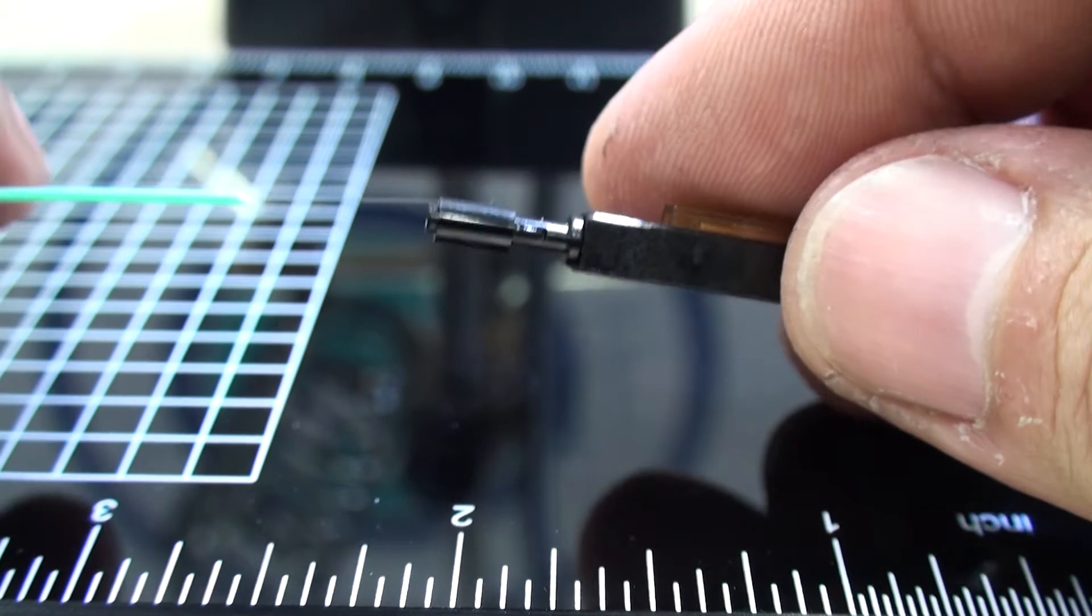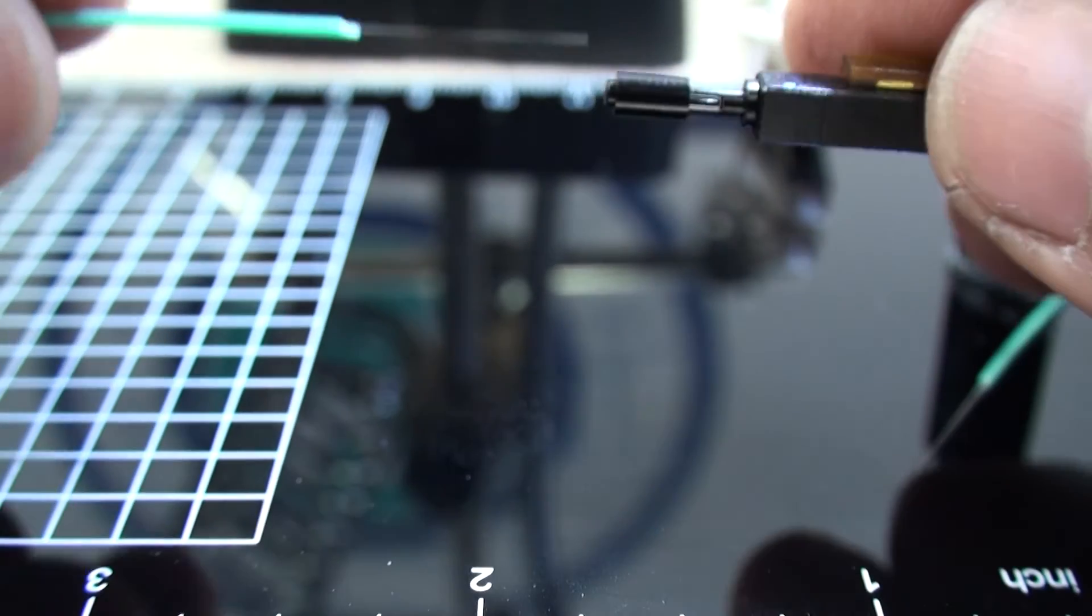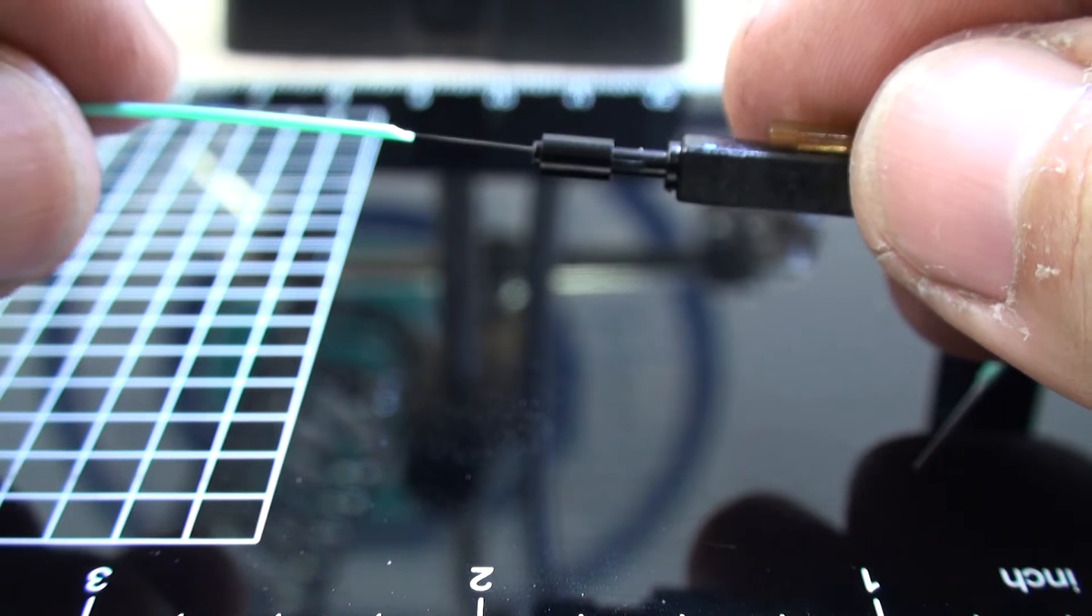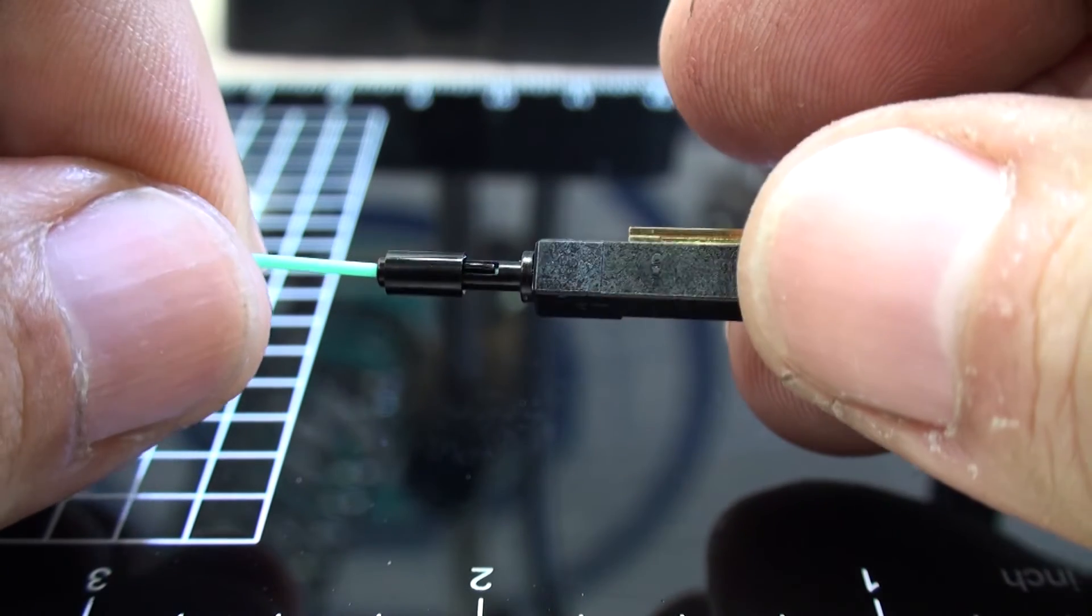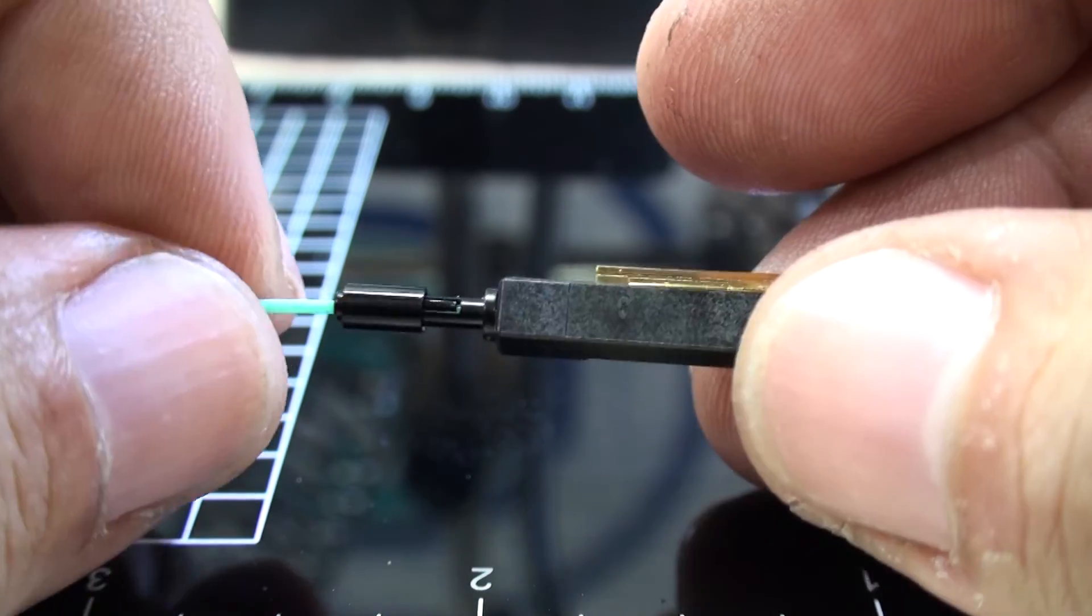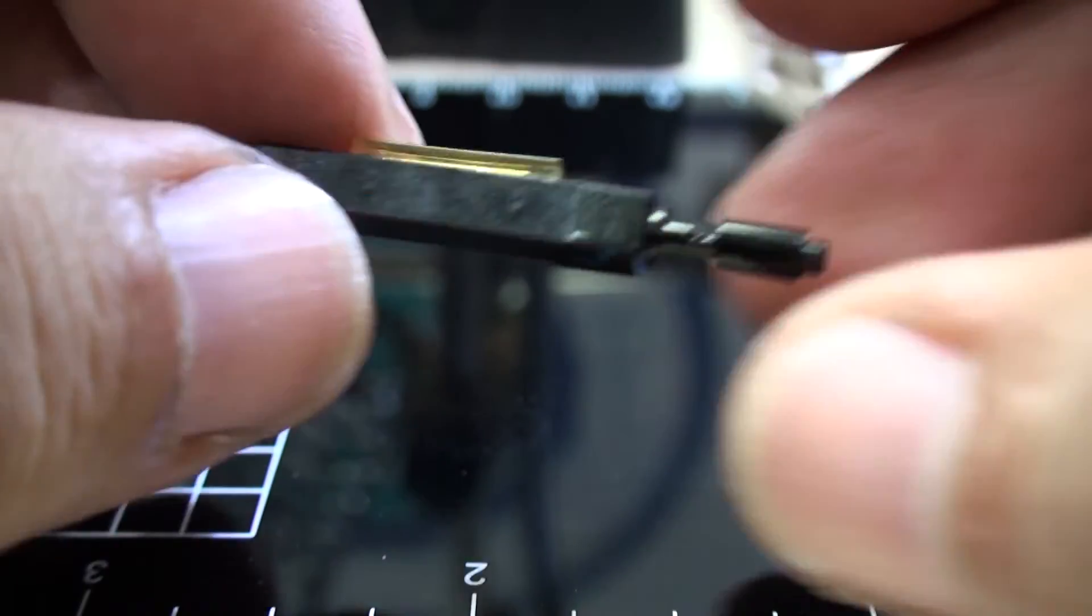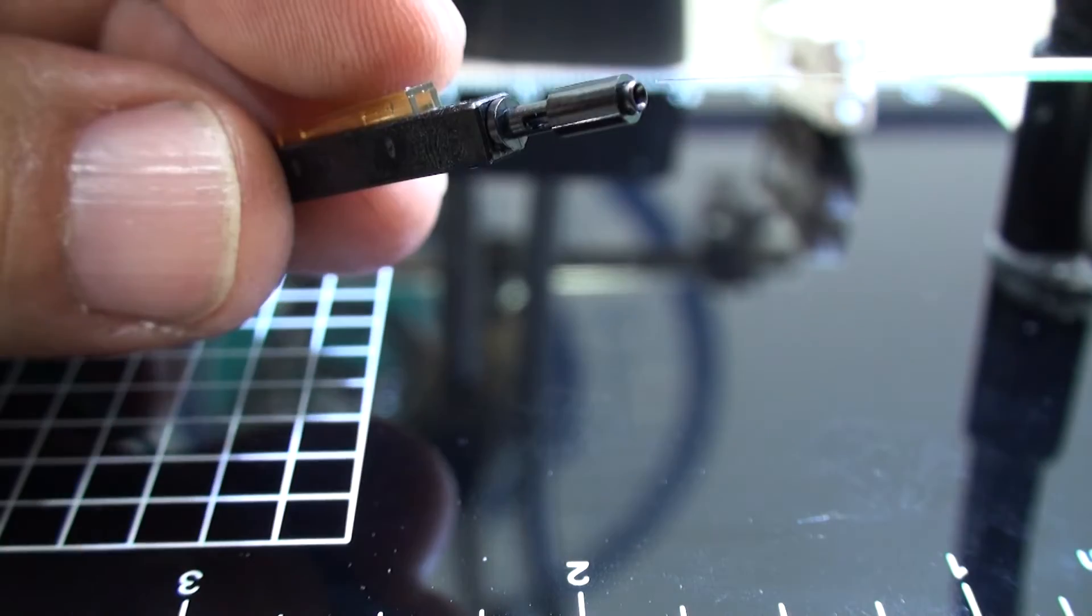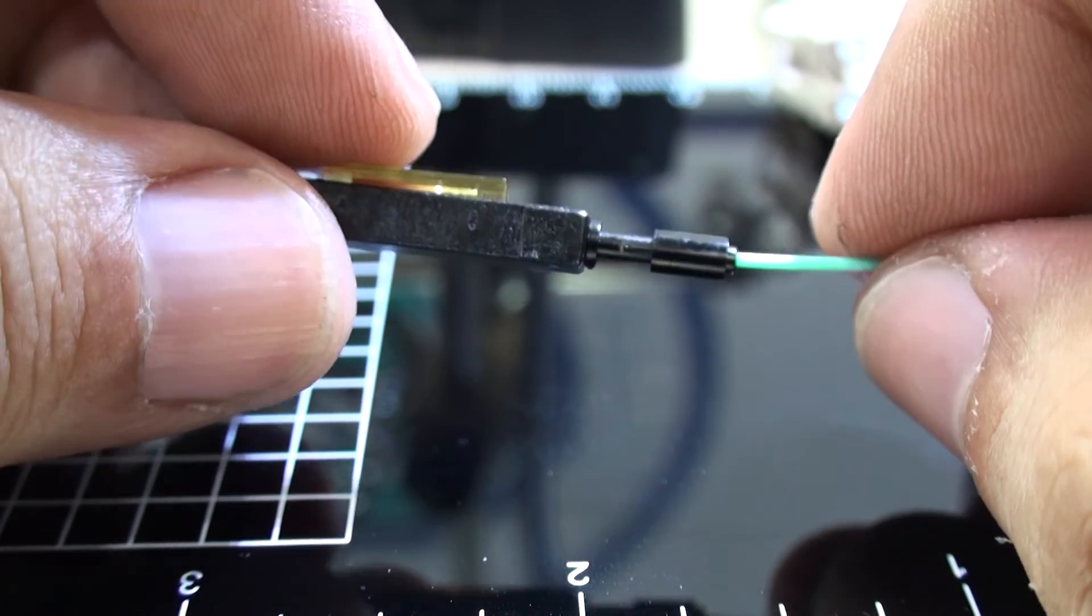Now we are ready to install the fiber into the mechanical splicer. Insert one end of the fiber. Once it reaches about half of the mechanism, secure the fiber by sliding these little rings. It will hold the fiber very well in place. Remember that the main concept of these splicers is that the cut end of the fiber is perfectly aligned with the other end.